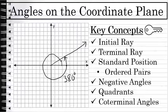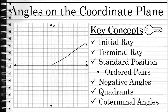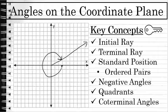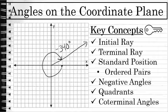Every angle on the coordinate plane actually has an infinite number of coterminal angles. A third angle coterminal with the 20-degree angle and the 380-degree angle would be a negative angle starting at the x-axis and traveling down and around the coordinate plane clockwise — this angle would be negative 340 degrees. It has the same terminal ray as the 20-degree angle and the 380-degree angle. All three of those angles are coterminal. When measuring angles in degrees, coterminal angles are 360 degrees apart.